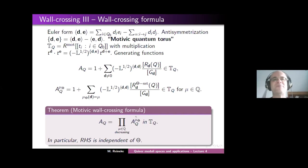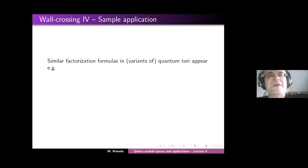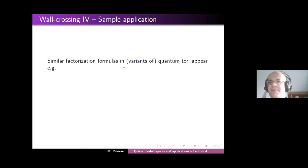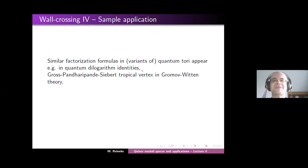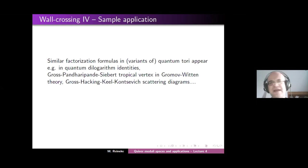The principle for applying wall-crossing formulas is the following. What we have in the wall-crossing formula is a factorization of one series into a product of many series in the motivic quantum torus. Factorization formulas in quantum tori appear in many other areas of mathematics: quantum dilogarithm identities (which we will do tomorrow), the tropical vertex formalism in Gromov-Witten theory (topic of today, developed by Gross-Pandharipande-Siebert), and the scattering diagram formalism of Gross-Hacking-Keel-Siebert, among others.